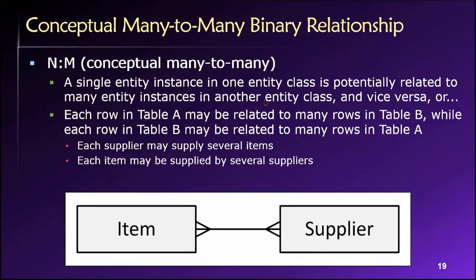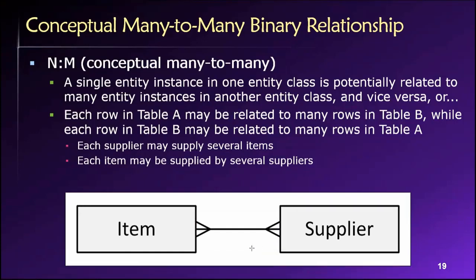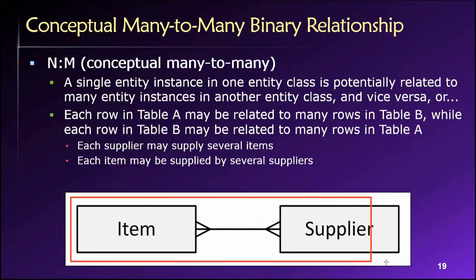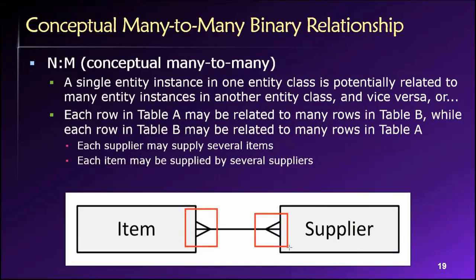Next, we're going to see a conceptual many-to-many relationship. I need to say this clearly: this is a conceptual notion of many-to-many, but we cannot actually implement it. A complete entity relationship model would never contain something like this because it simply cannot be implemented as a physical database. The relationship here between items and suppliers is many-to-many, but we cannot implement this directly in a real-world database.